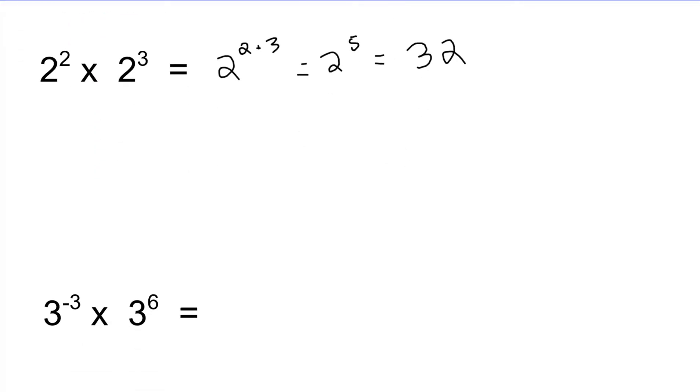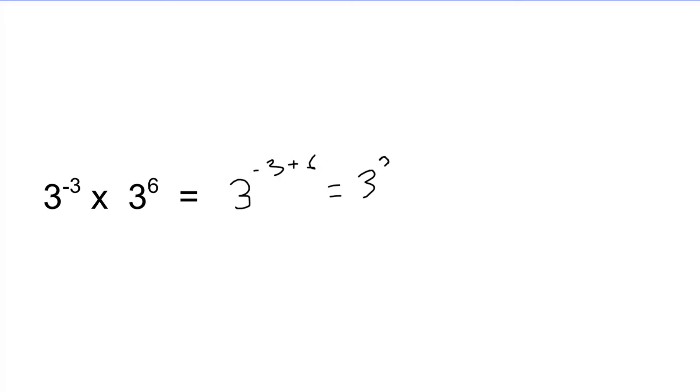Now we're going to look at one with some negative numbers. So same thing as before, the base will remain 3, and we're going to add our exponents because we're multiplying. So we have negative 3 plus 6. So our new expression is going to be 3 to the power of 3, which is equal to 27. And that is the product rule.